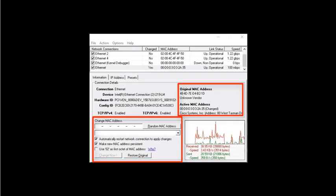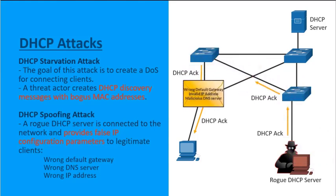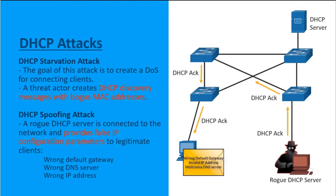Once all addresses are taken from the DHCP server, there's nothing left to provide to legitimate clients. In a DHCP spoofing attack, a threat actor puts their own rogue DHCP server on the network. When clients go through the DORA process, the rogue server finishes the conversation with an acknowledgement providing wrong default gateway info, incorrect DNS servers, and wrong IP addresses, effectively preventing legitimate clients from communicating on the network. Security safeguards must be implemented to prevent this.